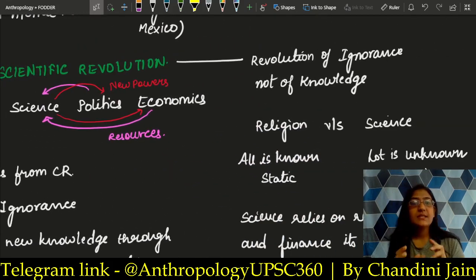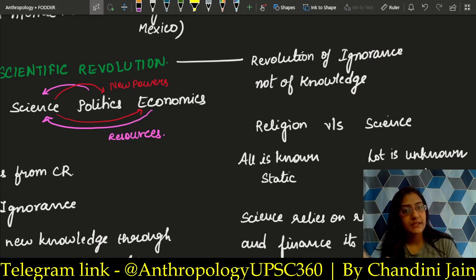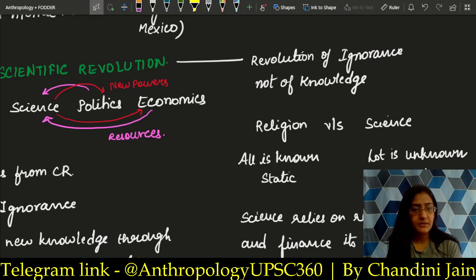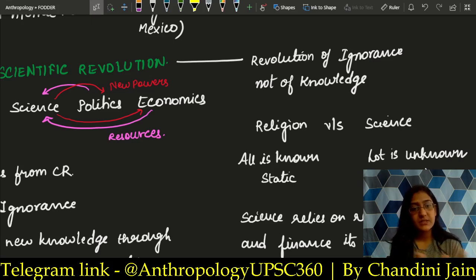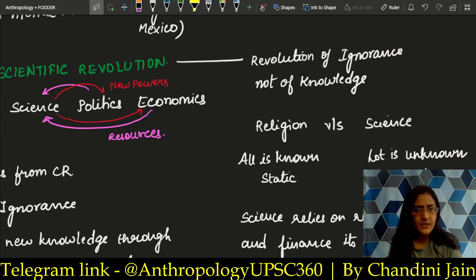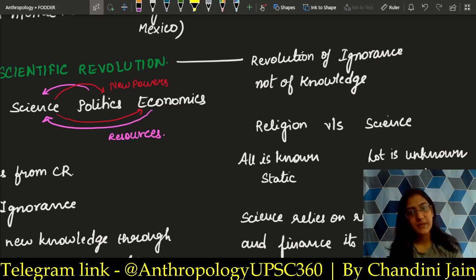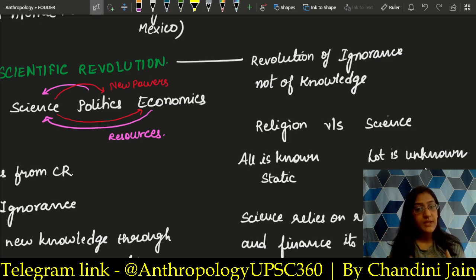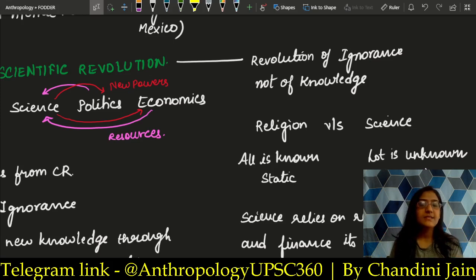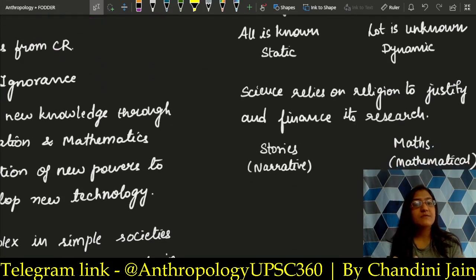The Scientific Revolution is the revolution of ignorance, not the revolution of knowledge. If you look at religion, it says all answers are in a particular book — religions tell you that you already know everything and what you don't know, you don't delve into. You cannot question, you cannot be curious. Science, on the other hand, says there are many things I don't know; I want to experiment and find out the truth. That is why the scientific revolution is termed the revolution of ignorance — because you are ignorant, you want to know more, and hence the scientific revolution happens.